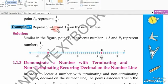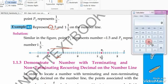Next, represent -1.5 and 1 1/5 on the number line. Draw a line with center at zero. Mark -1.5 on the left side. Now 1 1/5 equals 6/5 as an improper fraction.